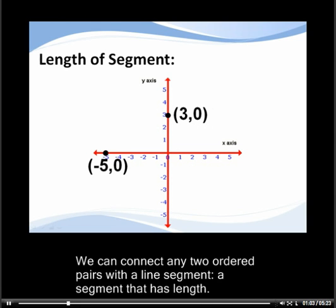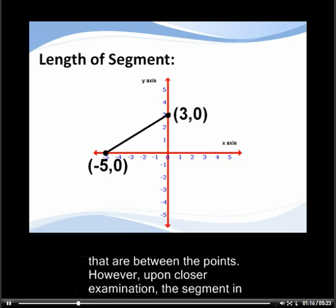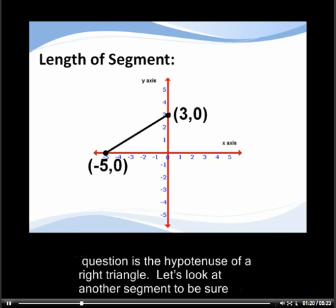We can connect any two ordered pairs with a line segment, a segment that has length. Finding the length of the segment isn't as simple as counting the number of units that are between the points. However, upon closer examination, the segment in question is the hypotenuse of a right triangle.